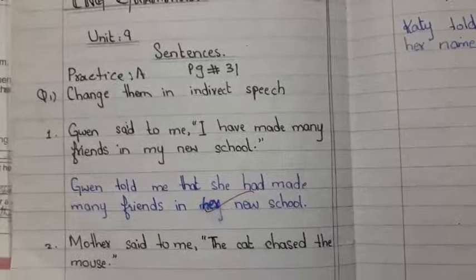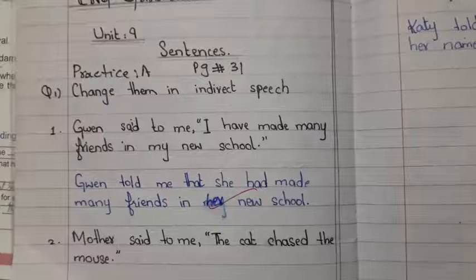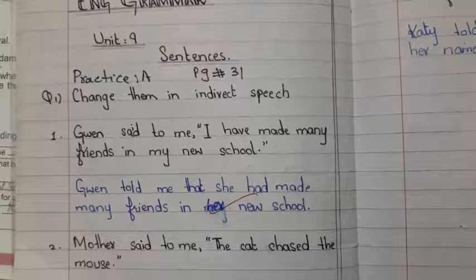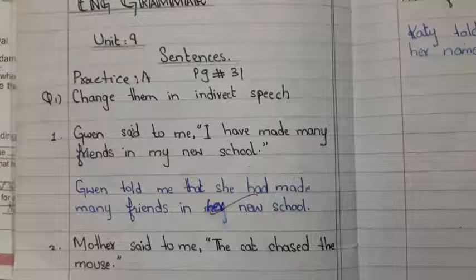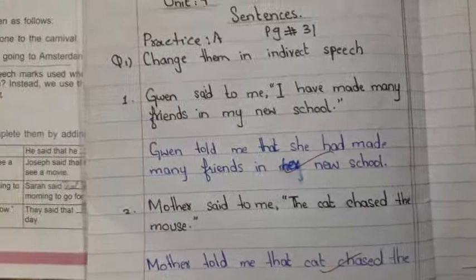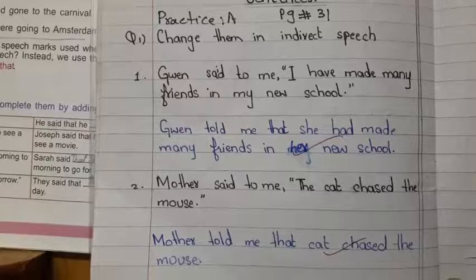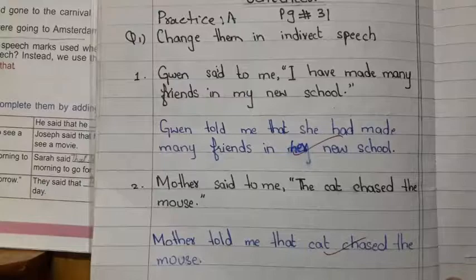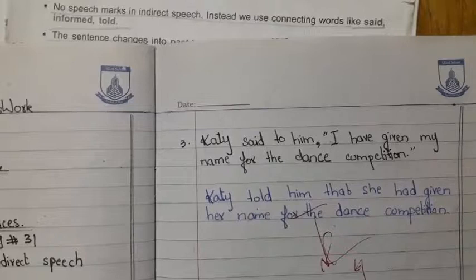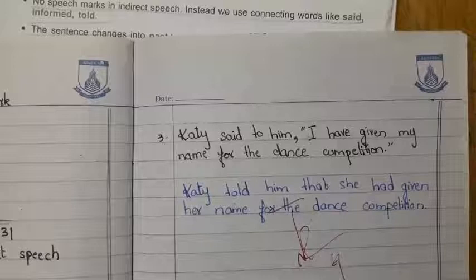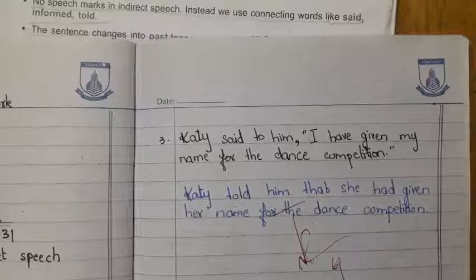Write these down in your copies. 'Wen said to me I have made many friends in my new school' changes into: 'Wen told me that she had made many friends in her new school.' 'Mother said to me the cat chased the mouse' changes into: 'Mother told me that the cat chased the mouse' — you can see the inverted commas are omitted and the sentence is joined using 'that.' 'Katie said to him I have given my name for the dance competition' changes into: 'Katie told him that she had given her name for the dance competition' — 'have' converts into 'had.'